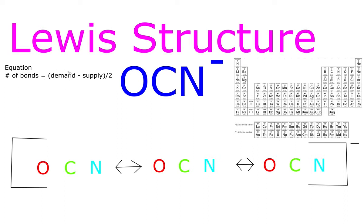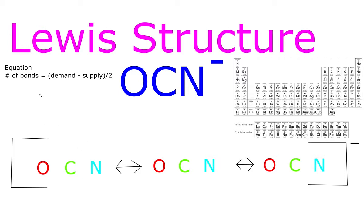So what is our demand? Our demand is to satisfy each atom to have a noble gas configuration. Oxygen likes to be surrounded by 8 valence electrons, as well as carbon and nitrogen — because of the octet rule, so they can be like neon. If we add all those up, that will be 24, so that's our demand.